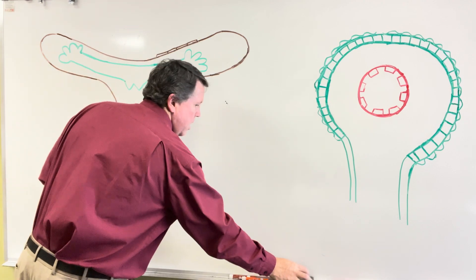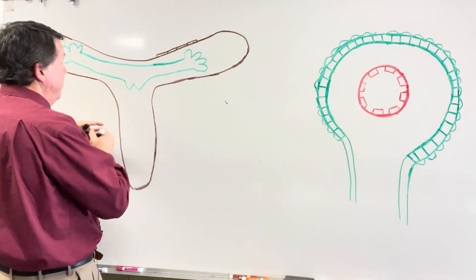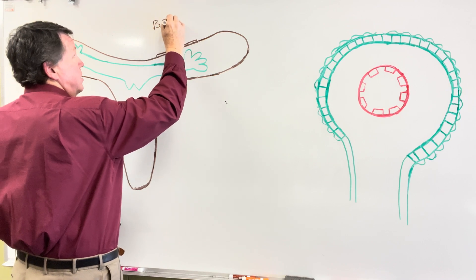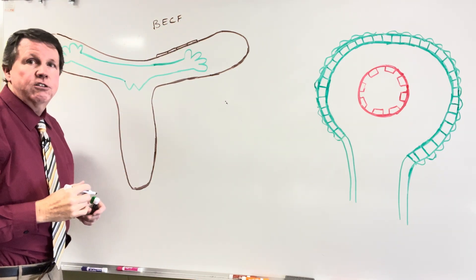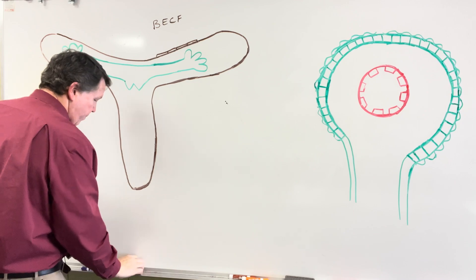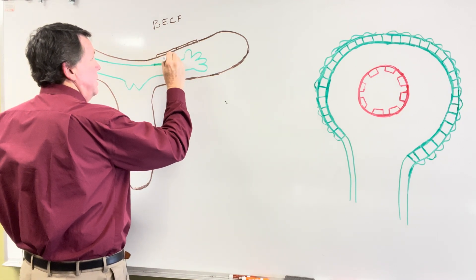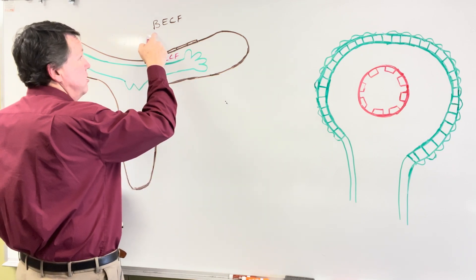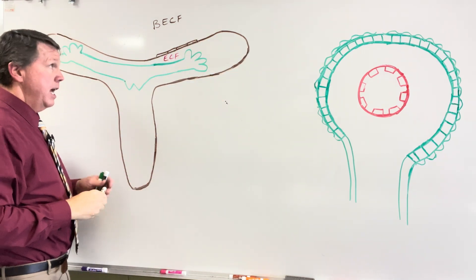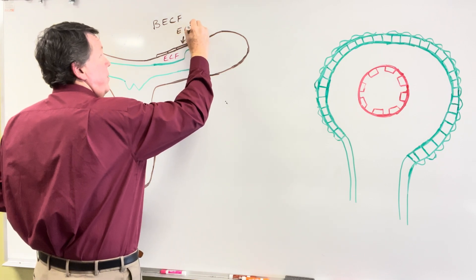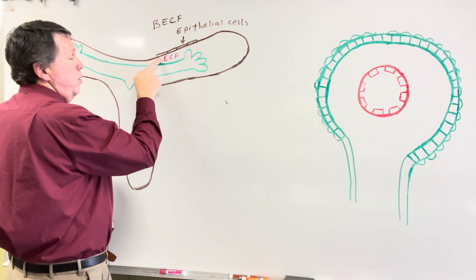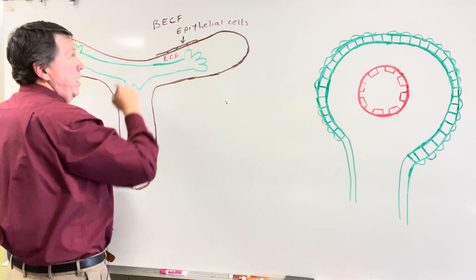These are some of the structures. We have epithelial cells here. This is going to be my brain extracellular space, which contains brain extracellular fluid. Inside here we're also going to have extracellular space containing extracellular fluid. We're going to have a barrier here made up of epithelial cells that separate this extracellular fluid inside the ventricle from the brain extracellular fluid.